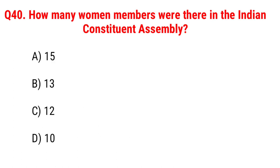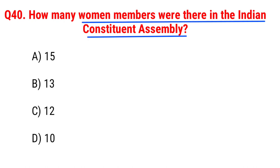The last question: how many women members were there in the Indian Constituent Assembly? It is a very important question, friends. You should remember this. Option A, 15; B, 13; C, 12; D, 10. The right answer is Option A, 15. There were a total of 15 women members in the Indian Constituent Assembly.